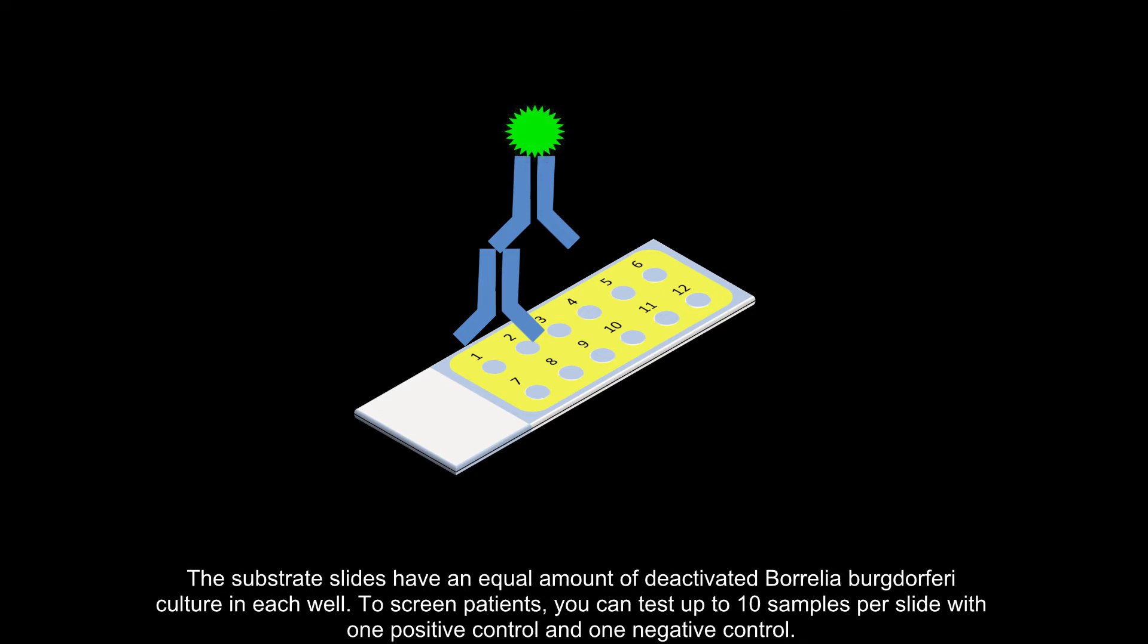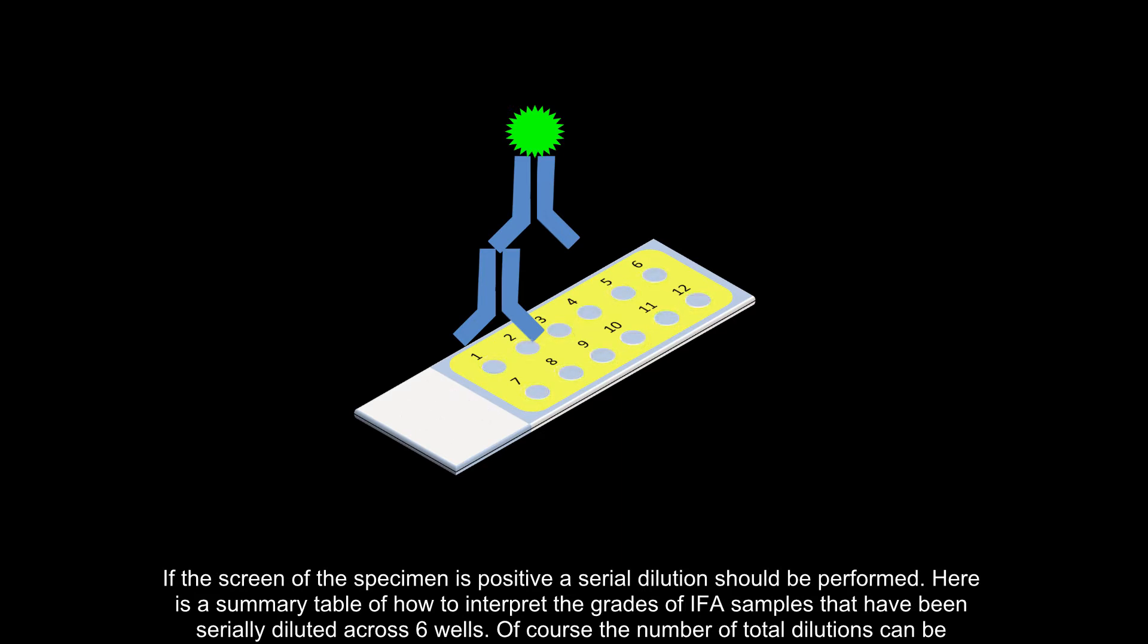The substrate slides have an equal amount of deactivated Borrelia burgdorferi culture in each well. To screen patients, you can test up to 10 samples per slide with one positive control and one negative control. If the screen of the specimen is positive, a serial dilution should be performed.